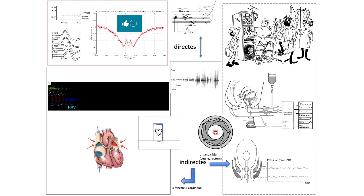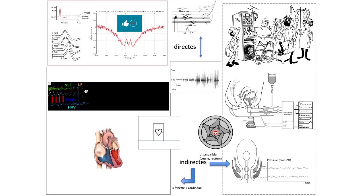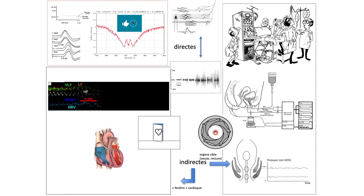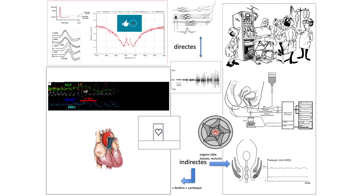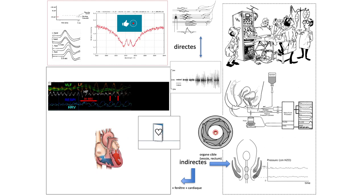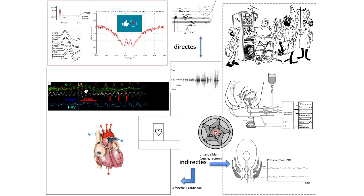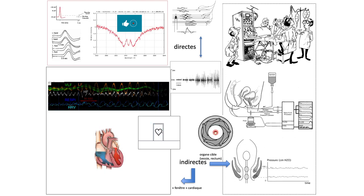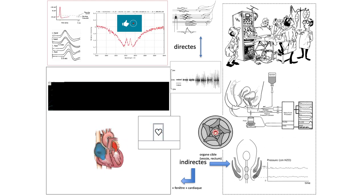On va aborder les différentes explorations, en se focalisant sur celles que tout un chacun peut réaliser — un chirurgien urologue, un gynécologue, un neurologue, un médecin de rééducation — quasiment à son cabinet. Pour évaluer ce système nerveux végétatif, on peut avoir soit des mesures directes, soit des mesures indirectes.